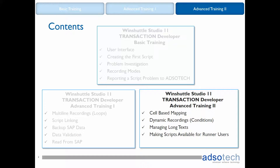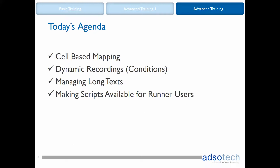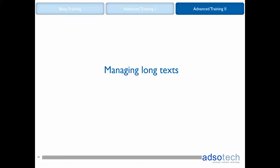We are now in the Advanced 2 training package, which includes cell-based mapping, conditions, long texts, and making scripts available for the runner users. This is the third part of that package and we will go through the use of long text fields. Let's dive in.